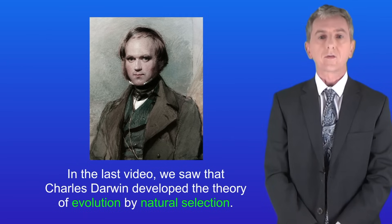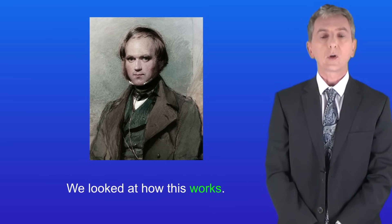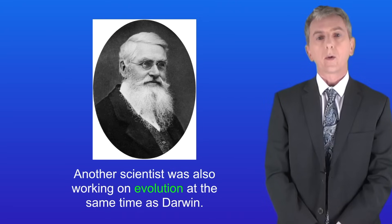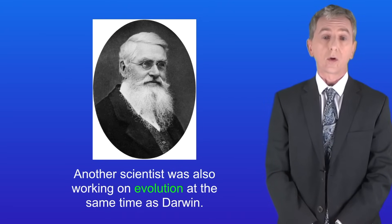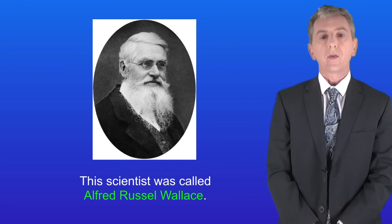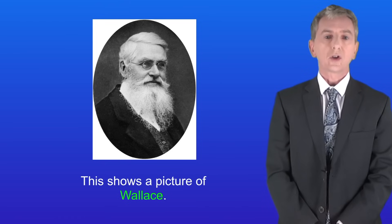In the last video we saw that Charles Darwin developed the theory of evolution by natural selection, and we looked at how this works. Now another scientist was also working on evolution at the same time as Darwin, and this scientist was called Alfred Russel Wallace. I'm showing you a picture of Wallace here.